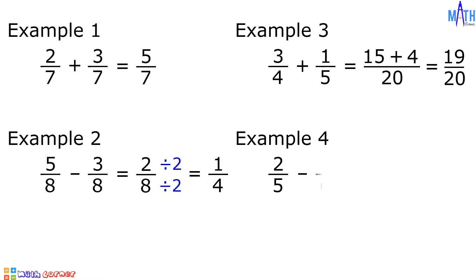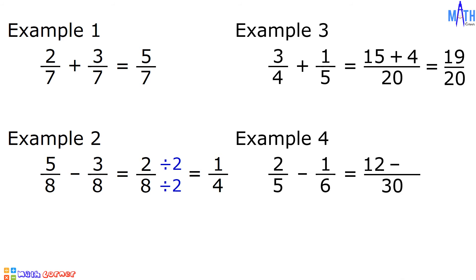Example number 4: 2 over 5 minus 1 over 6. This is subtraction of dissimilar fractions. Let us use the method from example number 3. 5 times 6 is equal to 30, and 30 is the denominator. Let us cross multiply: 2 times 6 is equal to 12, minus 5 times 1 is equal to 5. 12 minus 5 is equal to 7. So we have 7 over 30.